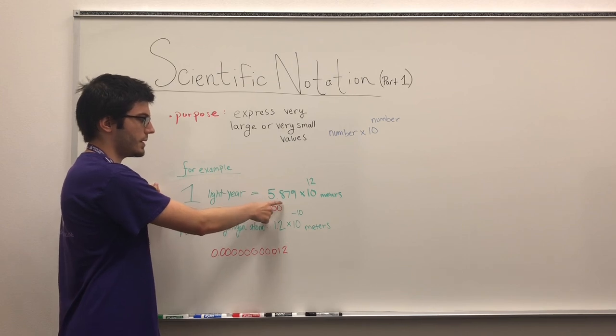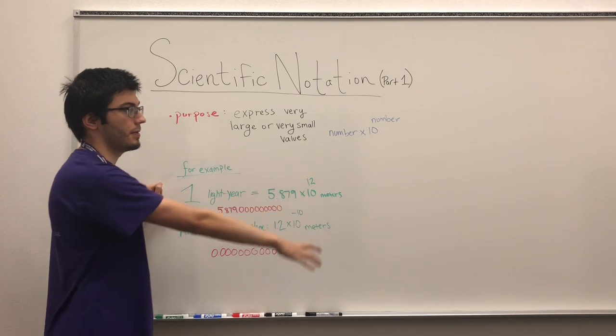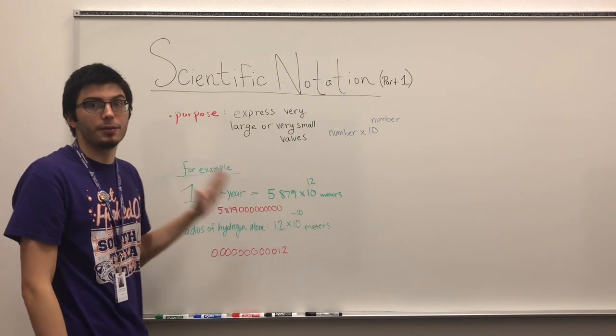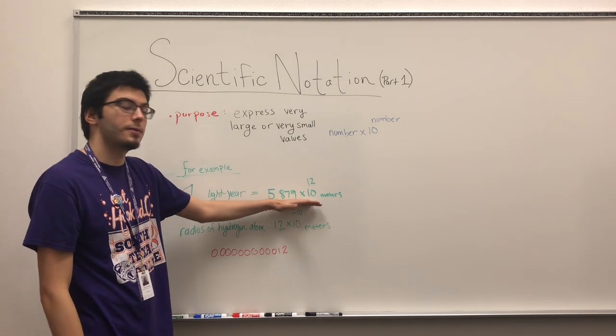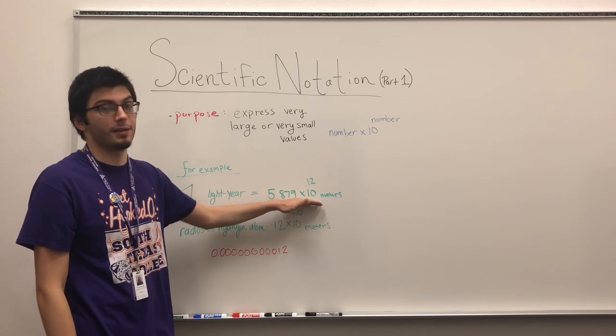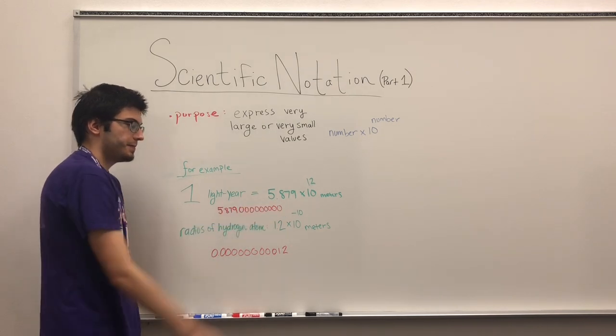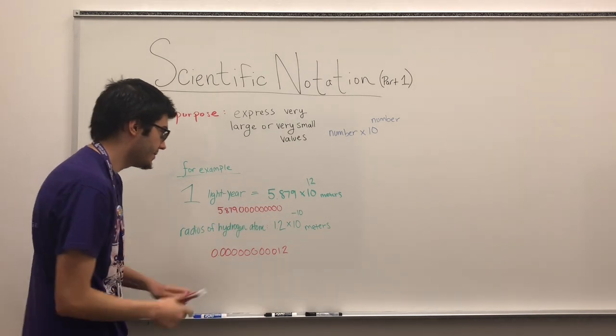It's 5.879 times 10 to the 12 meters. The reason we use this is it's a lot easier to do calculations and a lot easier to write this out compared to having to write out the full number. This shows just how big of a number the light year is.